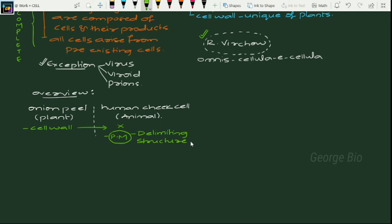Whatever it may be, plant cell or animal cell, all metabolic functions and chemical reactions take place in cytoplasm. The main arena for all cellular activities is cytoplasm.